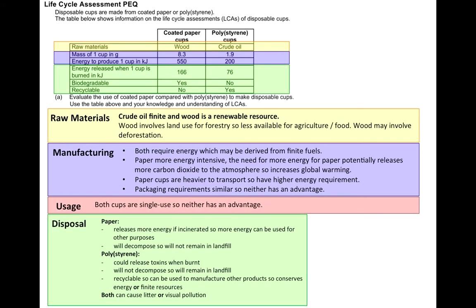Here's an overview of the information it's important to include in your answer — colour coded to show where each piece comes from. As this is an evaluate question, it's always good to finish with a justified conclusion. For example: use of paper cups is better as they are sustainable and biodegradable. Alternatively, you could conclude polystyrene cups are better because they require less energy to produce and are recyclable. There isn't necessarily a right or wrong answer — as long as you give a conclusion and justify it, that's absolutely fine.